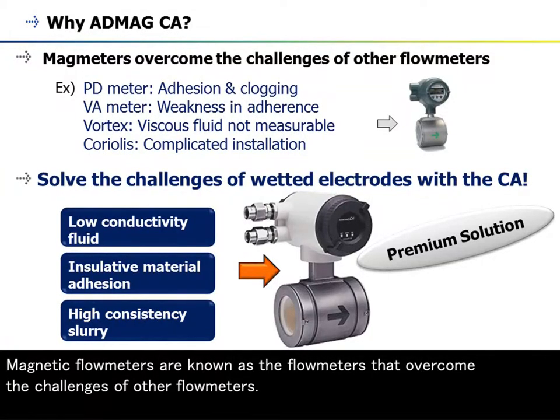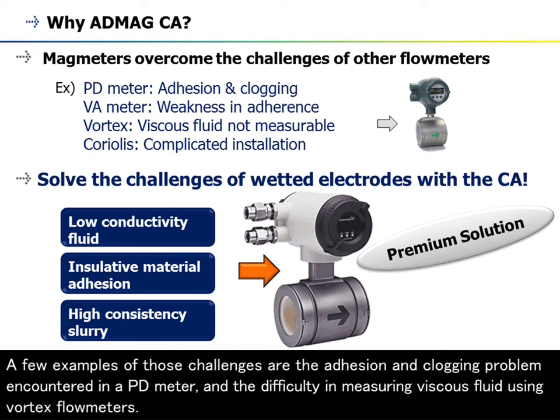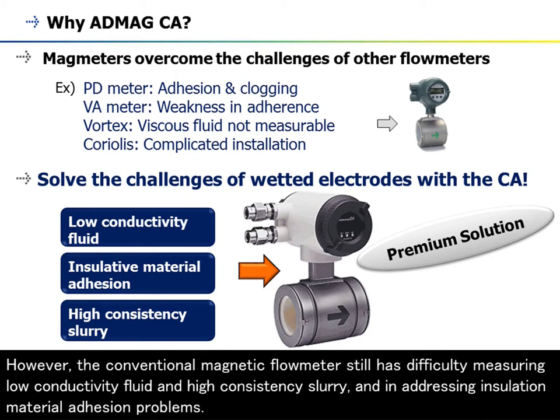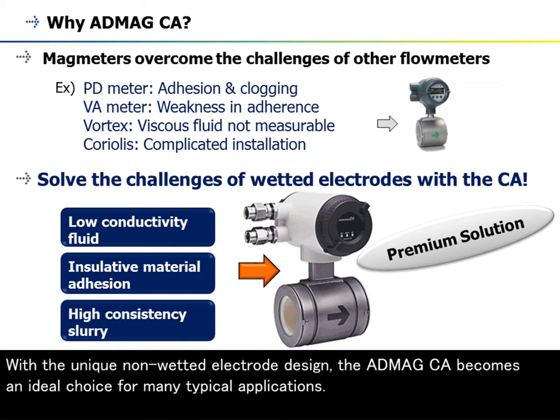Magnetic flow meters are known as the flow meters that overcome the challenges of other flow meters. A few examples of those challenges are the adhesion and clogging problem encountered in a PD meter, and the difficulty in measuring viscous fluid using vortex flow meters. However, the conventional magnetic flow meter still has difficulty measuring low-conductivity fluid and high-consistency slurry, and in addressing insulation material adhesion problems. With the unique non-wetting electrode design, the Abmec CA becomes an ideal choice for many typical applications.